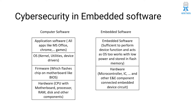In this slide, you can see the difference between computer software and embedded software. Looking at computer software from bottom to top, the bottom layer is hardware, which includes CPU with motherboard, processor, RAM, disk, and other components. On top of that, we have firmware, which flashes a chip on the motherboard, like BIOS.